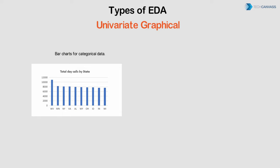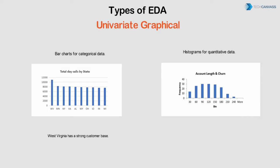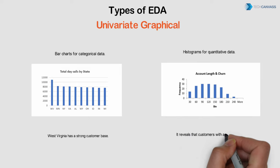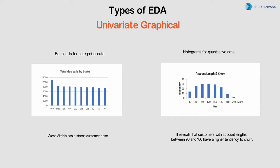Next they move on to visualizing univariate variables. Categorical data can be easily represented by a bar chart — this chart tells them that West Virginia has the highest total day calls, indicating a strong customer base. For quantitative data, histograms — bar plots where each bar represents the frequency or count of cases for a range of values — are very useful. They help in understanding central tendency, spread, shape, and outliers. The histogram reveals that customers with account lengths between 90 and 180 have a higher tendency to churn, suggesting offers or loyalty points could be introduced.